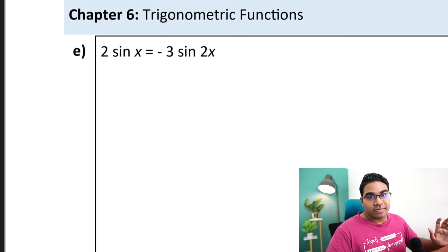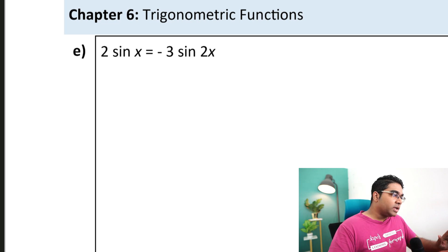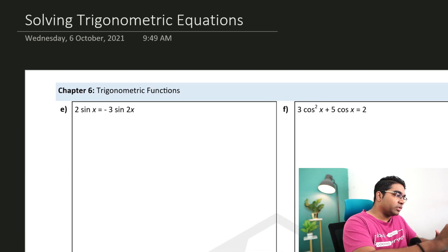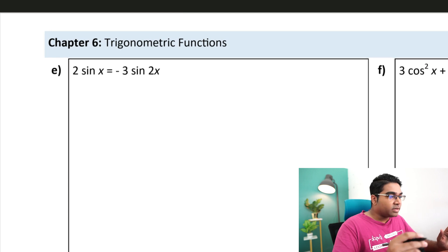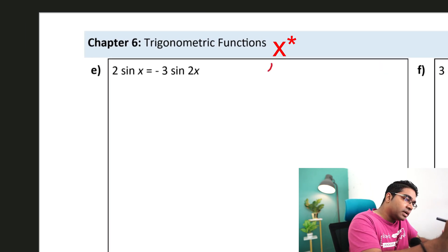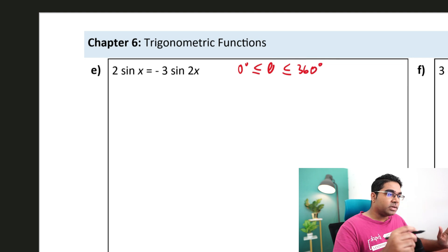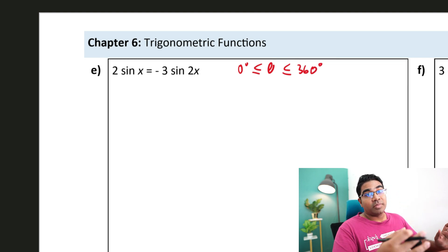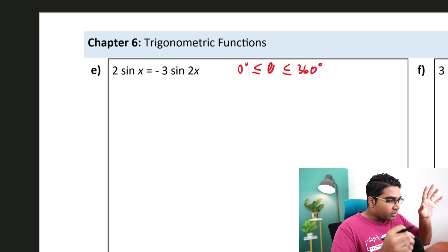2 sine of x is equals to negative 3 sine of 2x. First we need to check the range of x we are required to solve for and in this particular case the range of theta, let's just note that down, theta is from 0 degrees to 360 degrees. If we do not check our range then we will have an infinite number of answers.